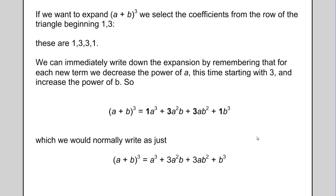If we want to expand a plus b cubed, we would then select the coefficients from the row of the triangle that begins with 1, 3, or essentially the 4th row. So those coefficients are 1, 3, 3, 1. We can immediately write down what the expansion would look like. It would be 1a cubed, remember the a term goes from 3 all the way down to 0, whereas the b terms exponent goes from 0 all the way to 3. So it would be 1a cubed plus 3a squared b plus 3ab squared plus 1b cubed.